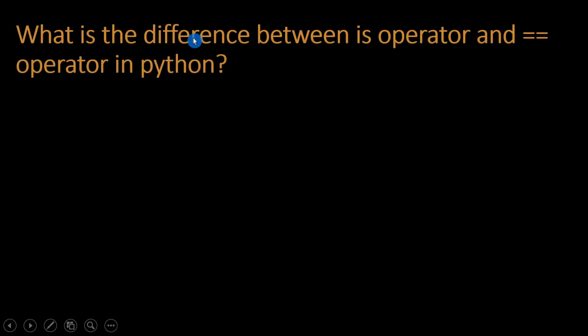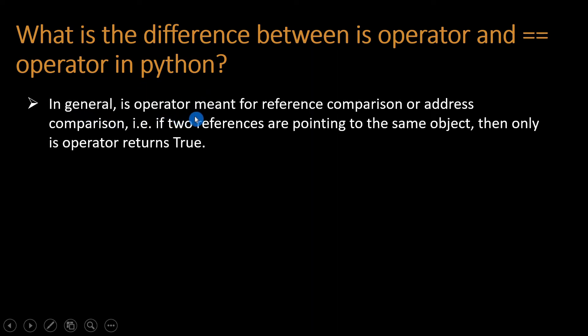Hi guys, today we are going to discuss one commonly asked interview question: what is the difference between the is operator and == operator in Python? In general, the is operator is meant for reference comparison or address comparison.